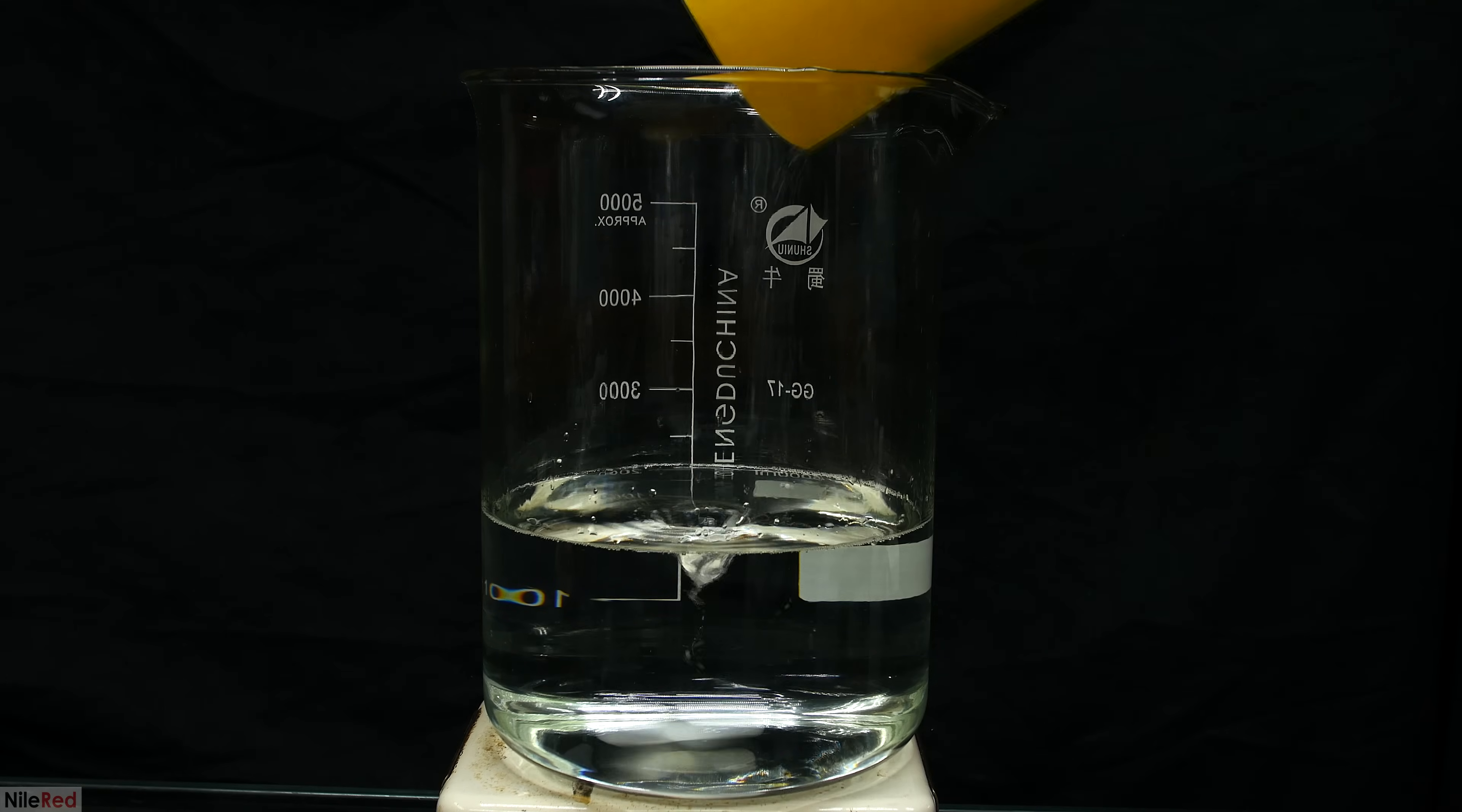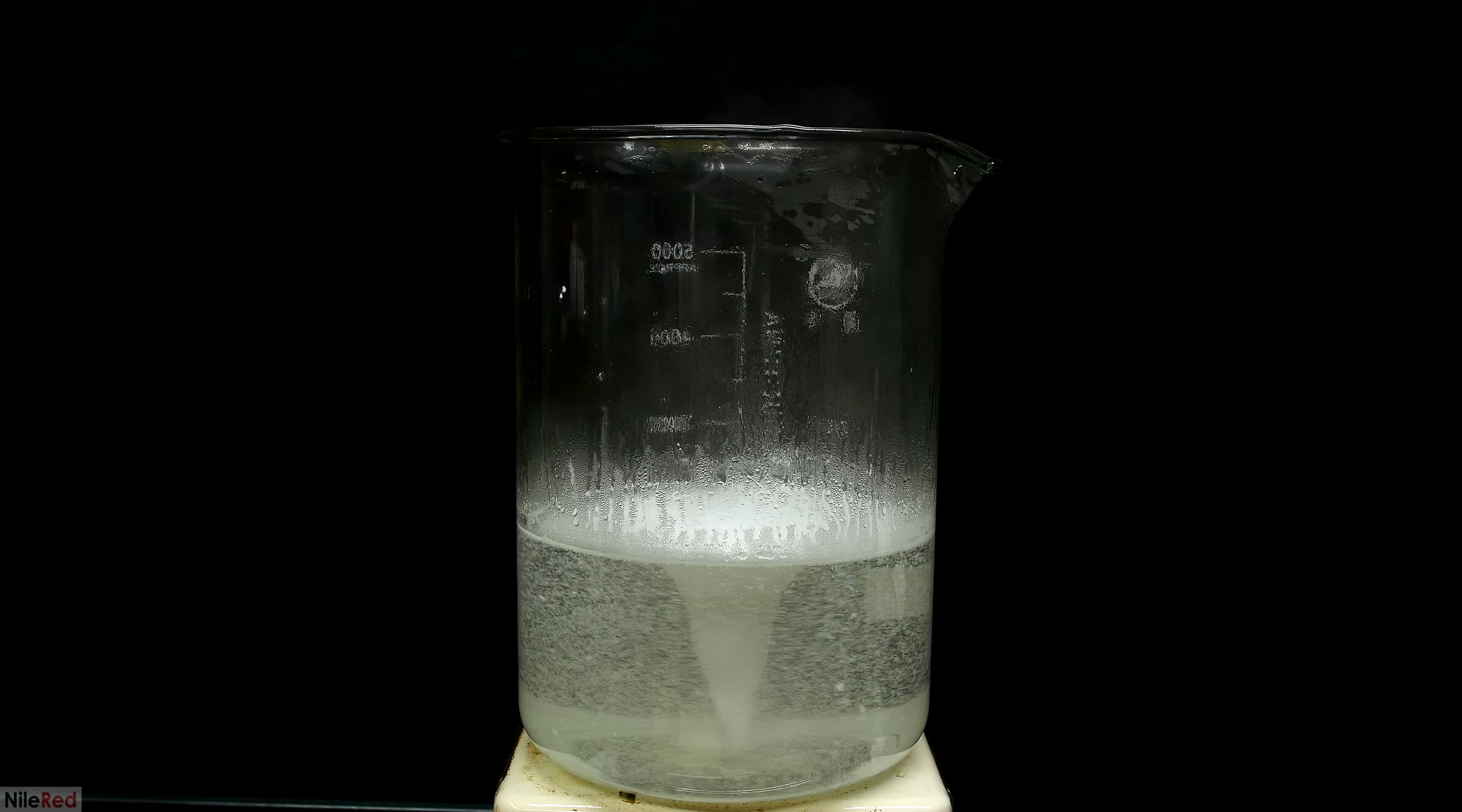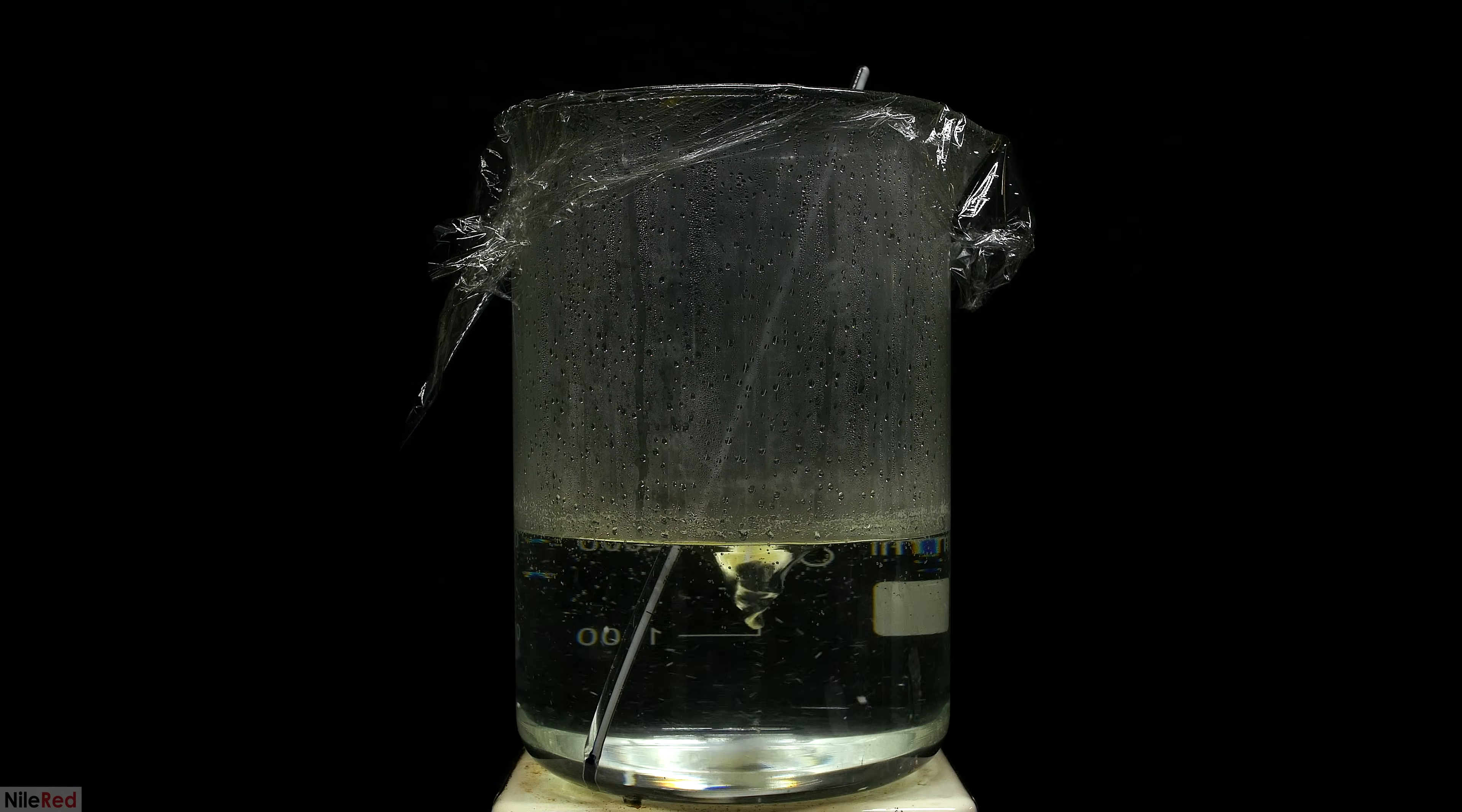I went ahead and dumped all of the trans-cinnamic acid into about 2 liters of distilled water. As the solution heats up and gets closer and closer to boiling, the trans-cinnamic acid slowly dissolves. Just to get an idea of how close I was to the boiling point, I added in a thermometer. I was also losing a lot of heat and water due to the steam escaping out the top, so I just covered things up with some saran wrap.